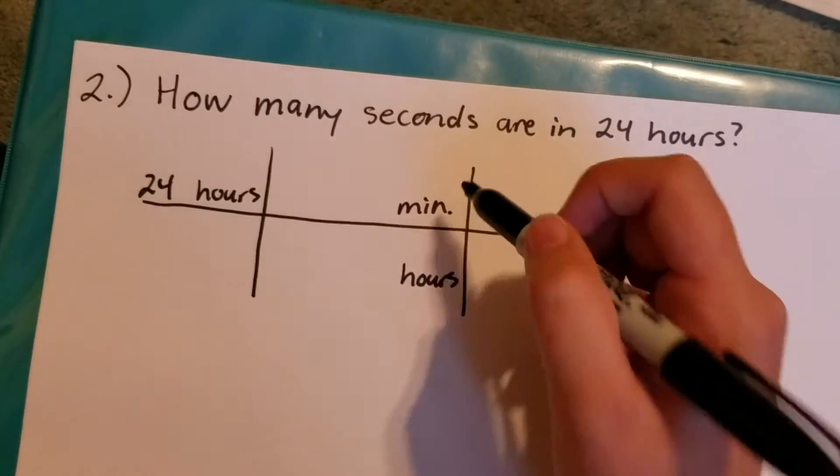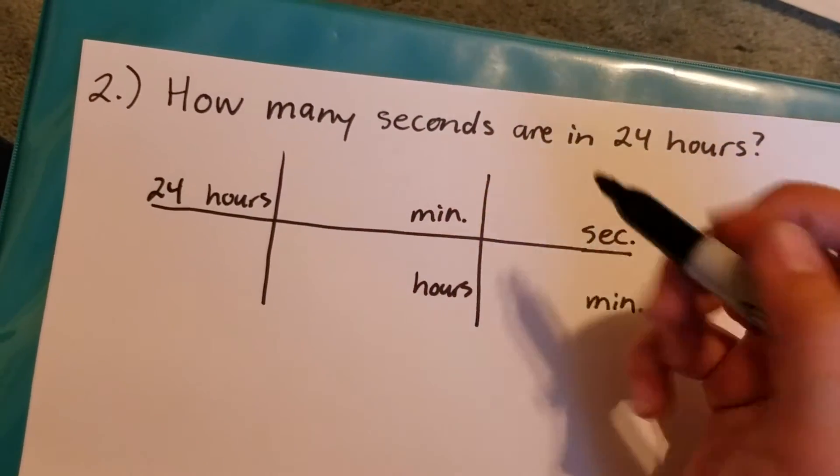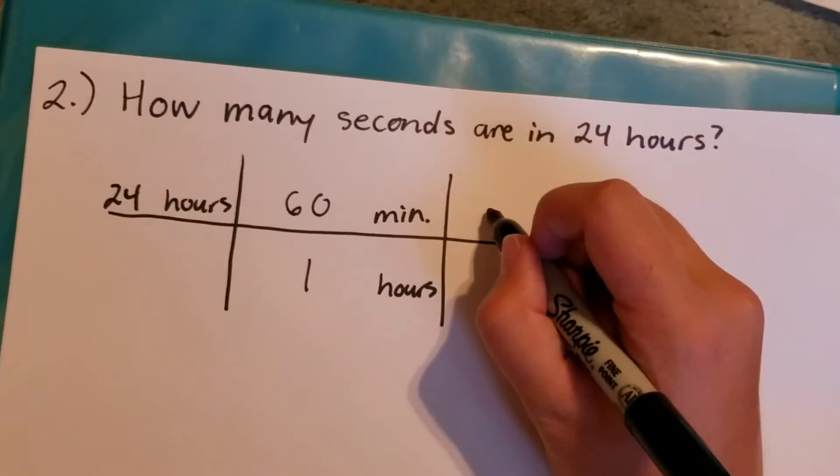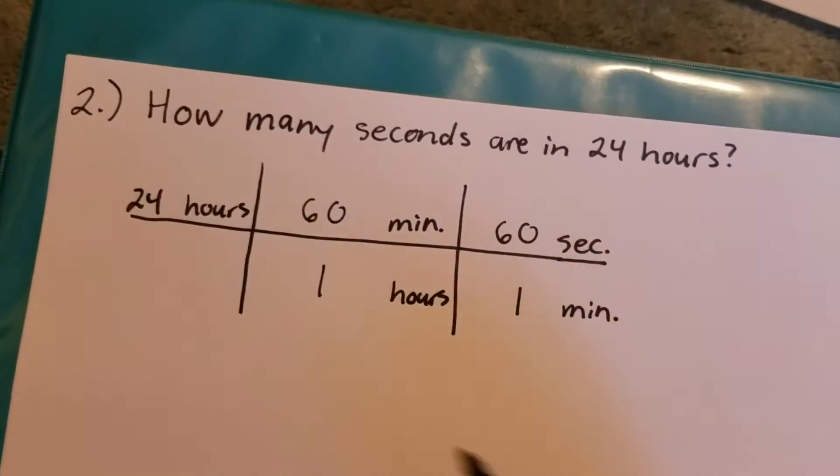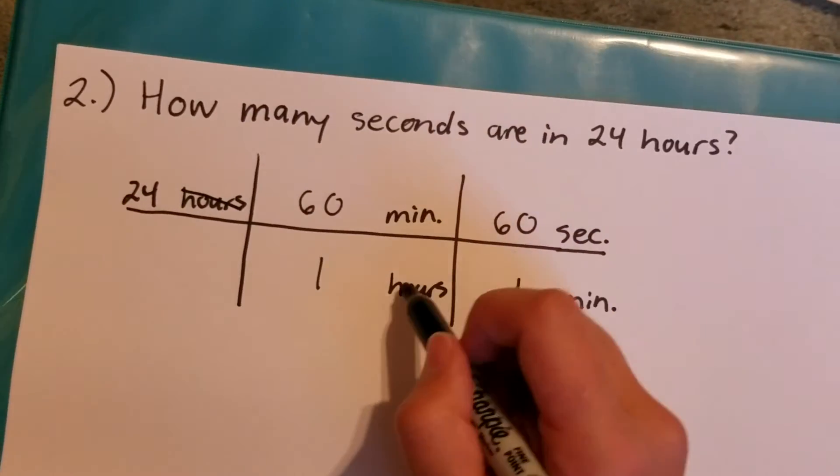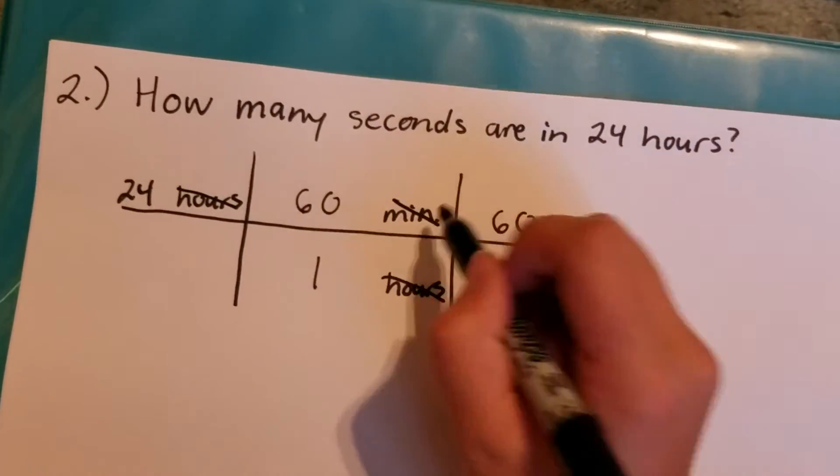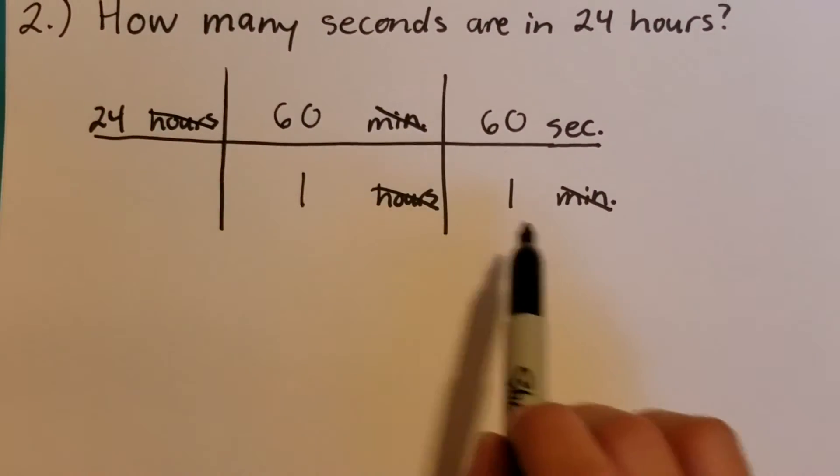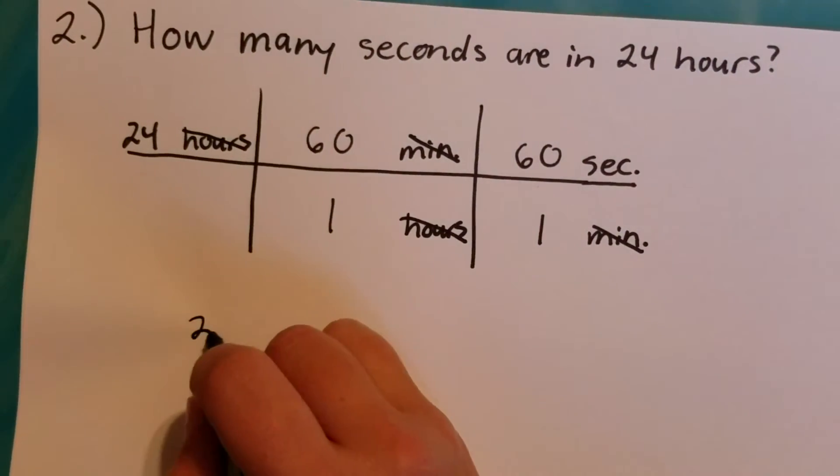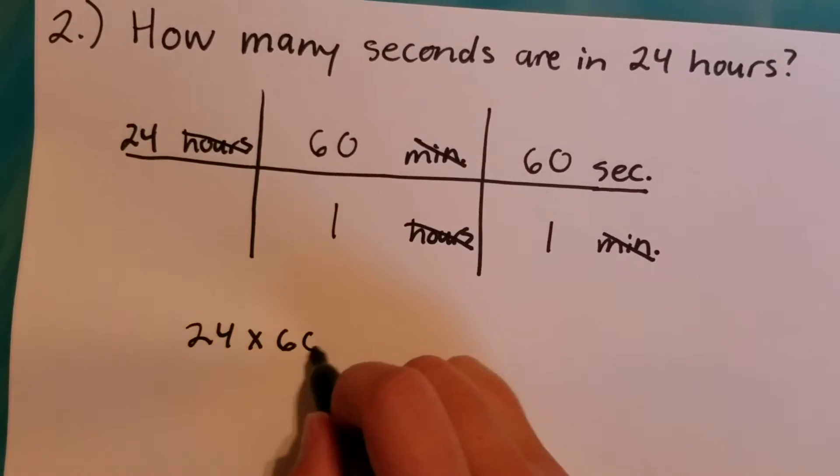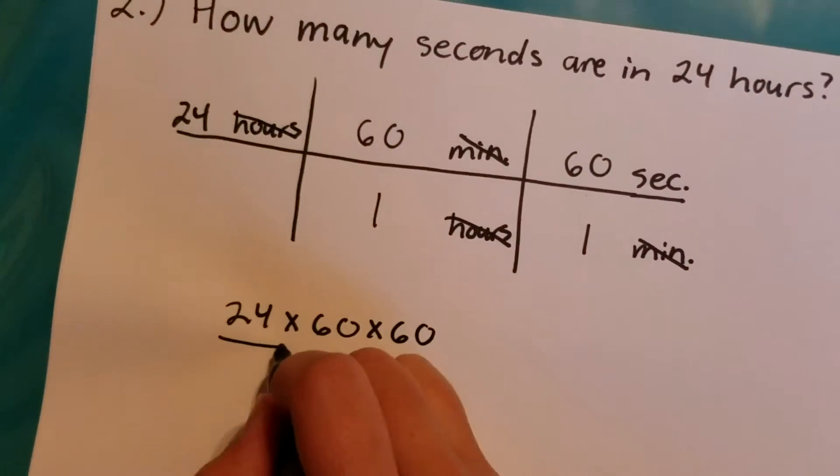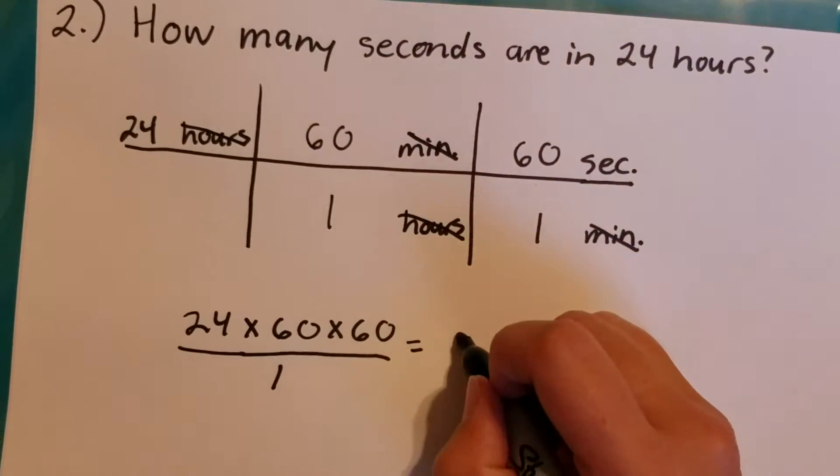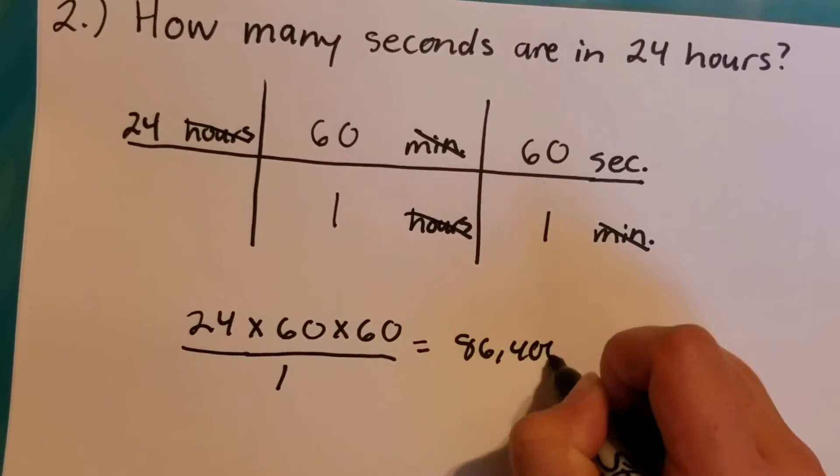And then how many minutes are in 1 hour? There's 60 minutes in 1 hour. And then how many seconds are in 1 minute? 60 seconds. So now my hours will cancel and my minutes will cancel. And then I just multiply straight across the top row and straight across the bottom row. So 24 times 60 times 60 divided by 1 and that comes out to 86,400 seconds.